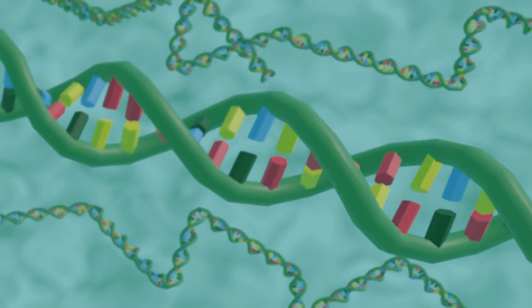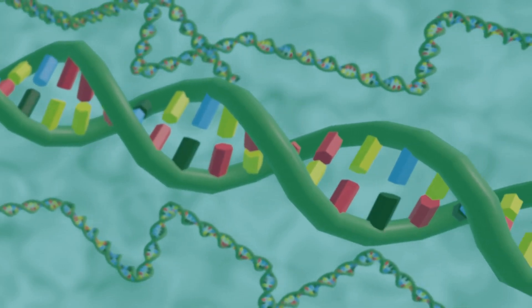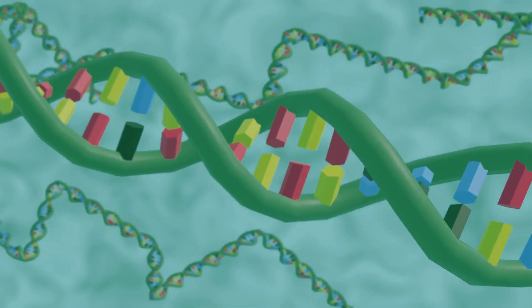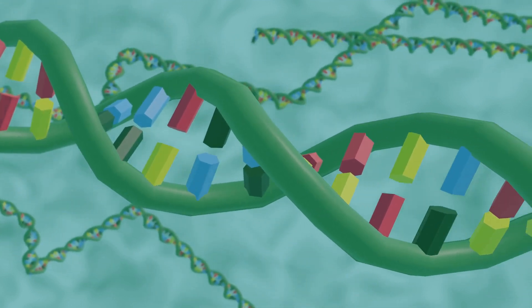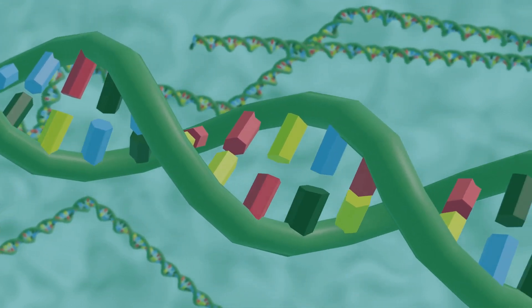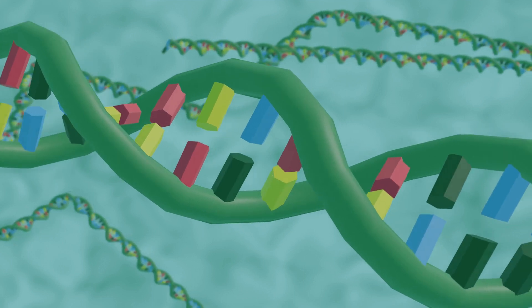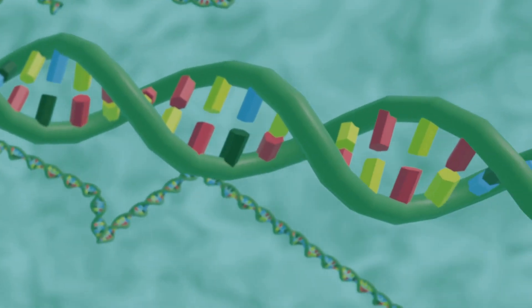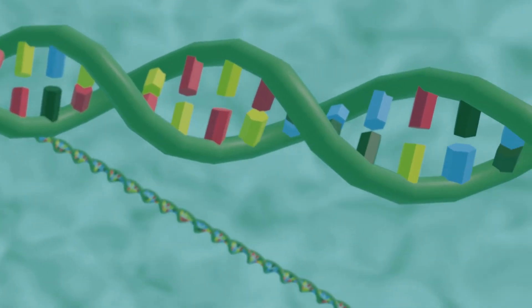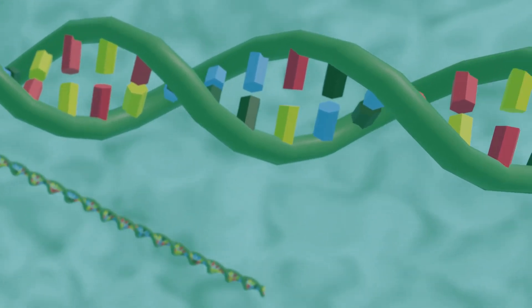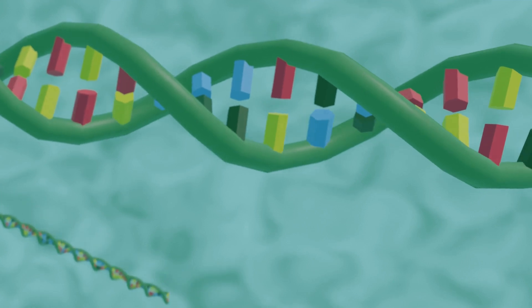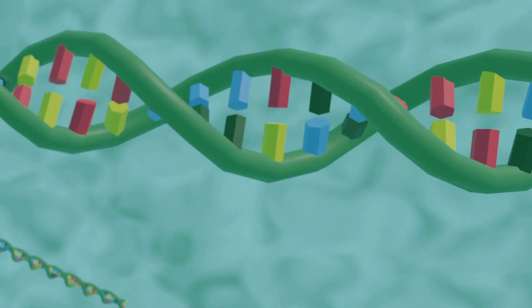DNA is packed into chromosomes. It is the cell's hereditary material and contains instructions for development, growth, and reproduction. DNA is made of two-length strands that wind around each other to resemble a twisted ladder, a shape known as a double helix.